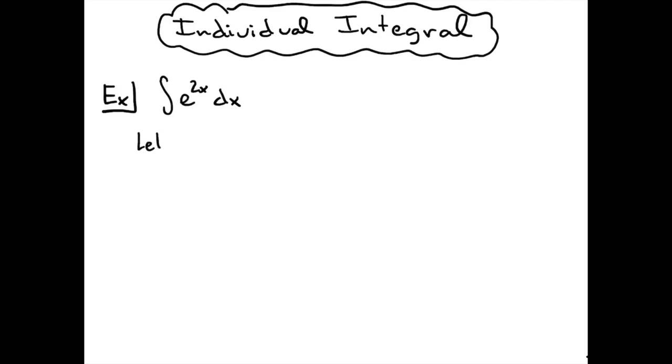We're going to let our u equal the 2x. We're then going to take the derivative of both sides. We'll have du is equal to 2 dx.